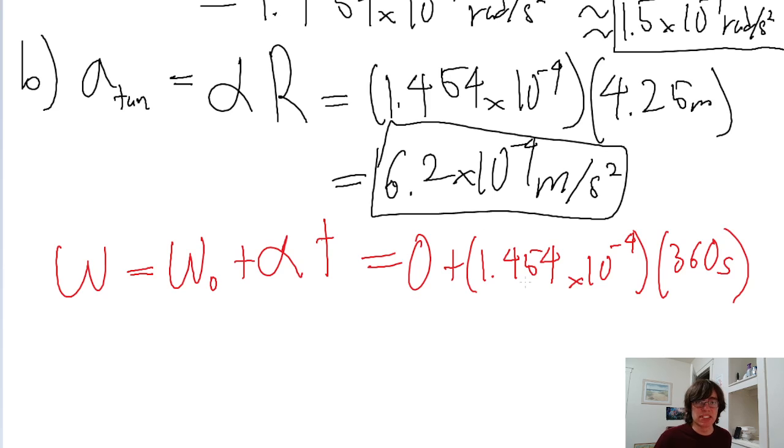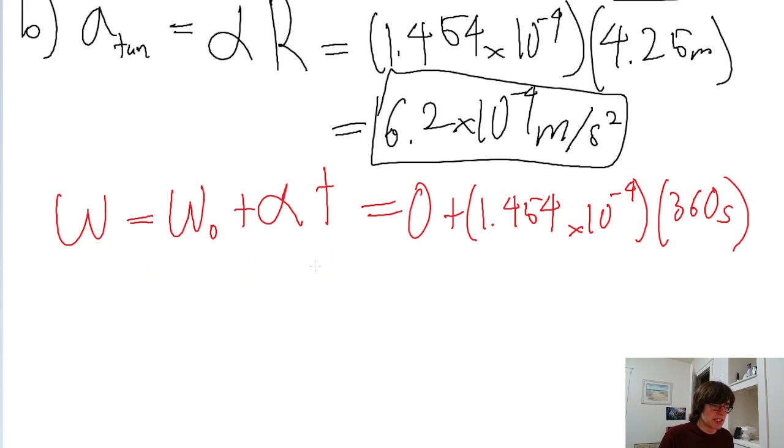The time is 6 minutes, and converting from 6 minutes into seconds, we take the minutes, multiply by 60, and that's 360 seconds. So that gives us an angular speed of 5.234 × 10⁻² radians per second. That is the angular speed, the final angular speed.